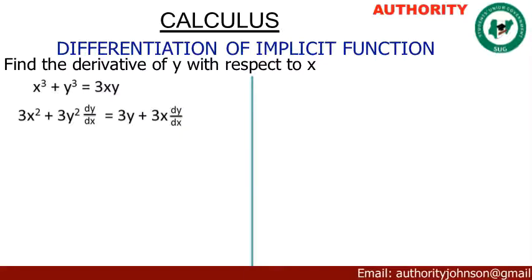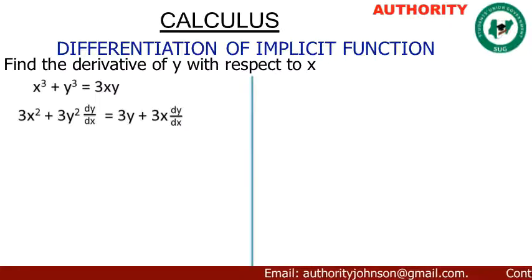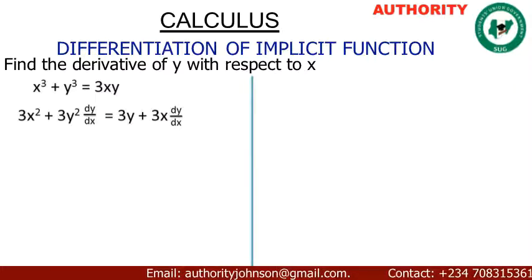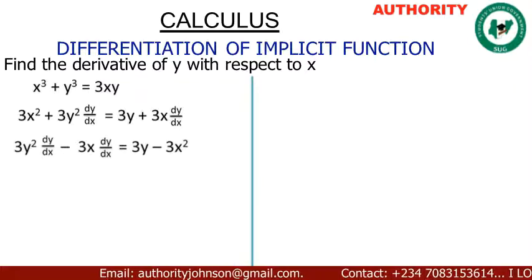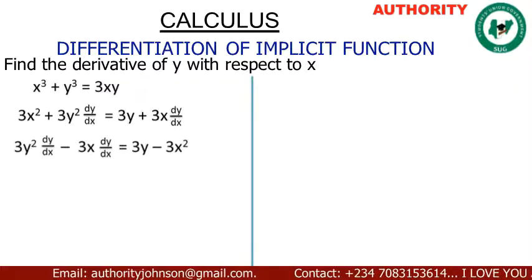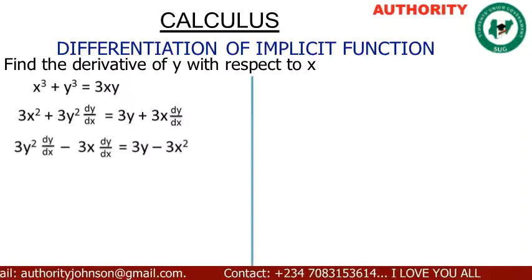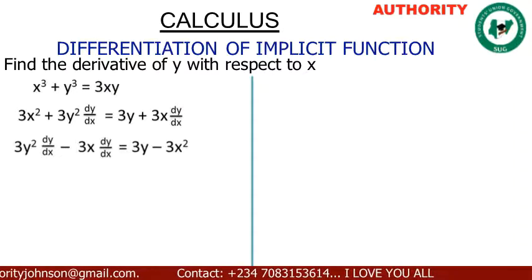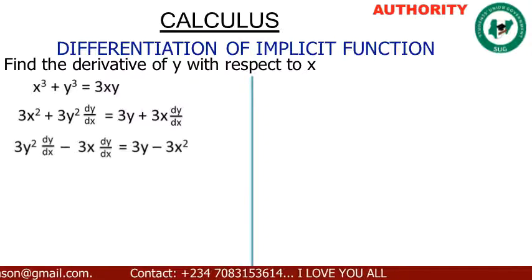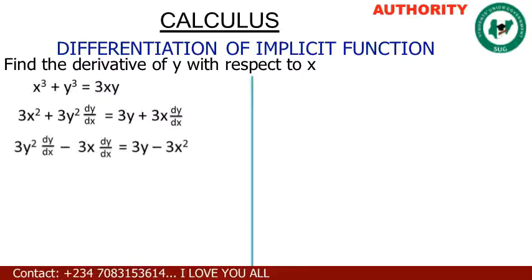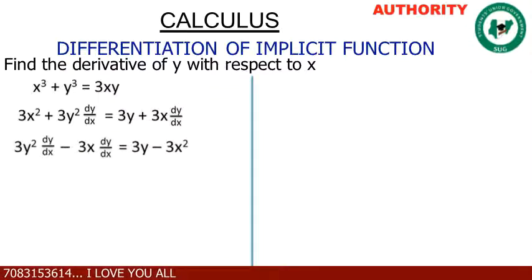Now let's collect the like terms — the ones having dy/dx — and put them on one side. We have 3y squared dy/dx, and we bring the 3x dy/dx from the other side, making it minus 3x dy/dx. On the right side we have 3y, and we move 3x squared to that side as minus 3x squared.